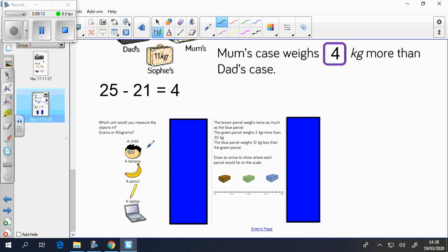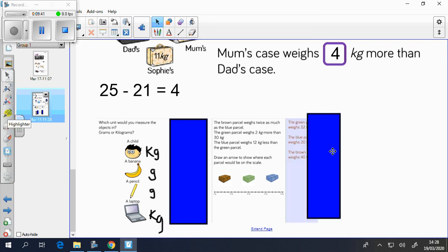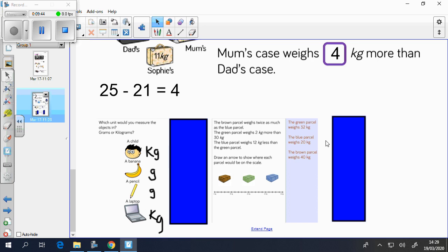So with the child, I would measure him in kilograms because obviously he's going to be too heavy to measure in grams. The banana, I would measure in grams because it's a light object. Same for the pencil. It's really light, so I would measure in grams. And then the laptop is quite heavy, so I would measure the laptop in kilograms. The green parcel weighs 32 kg. Don't worry if you didn't get to put the arrows on the line because it is very blurry and hard to see. The blue parcel weighs 20 kg and the brown parcel weighs 40 kg.